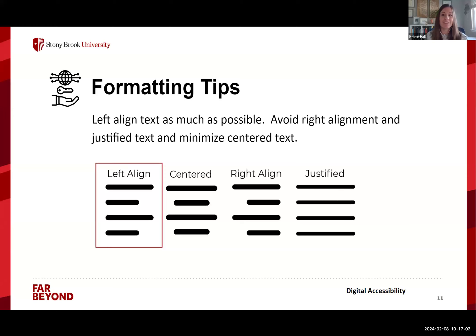The next tip is to left-align your text as much as possible. Avoid right alignments and specifically justified text. Justified text creates lots of spaces or uneven spacing between words, which can make things difficult to follow in a document. Centered text is okay, but save it for titles. You don't want to center text completely, as it's more challenging to read than left-aligned — but it is okay to use sparingly, especially for headings.